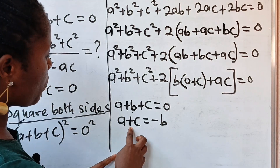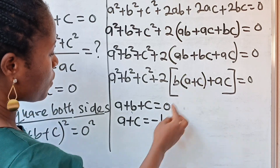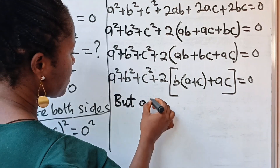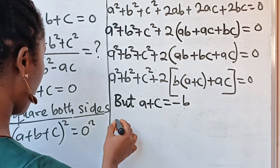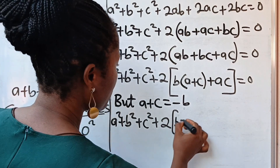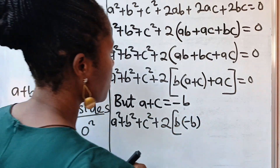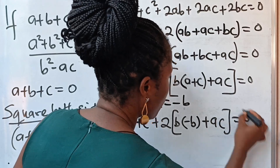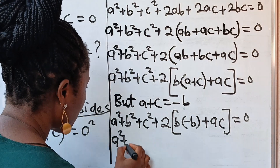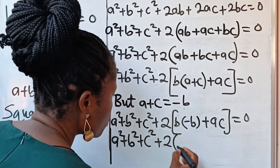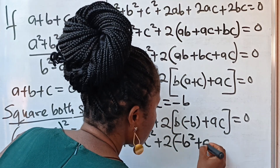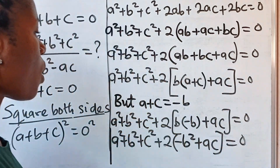So we are going to replace a plus c with minus b. We have a squared plus b squared plus c squared plus 2 into b brackets — and since a plus c is minus b — then plus ac is equal to zero. Now b times minus b will give us minus b squared. So we have a squared plus b squared plus c squared plus 2 brackets, minus b squared plus ac, is equal to zero.